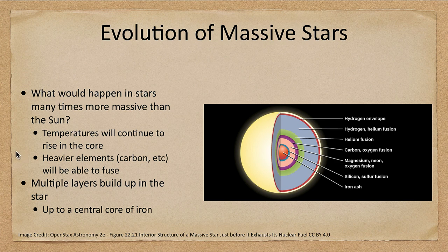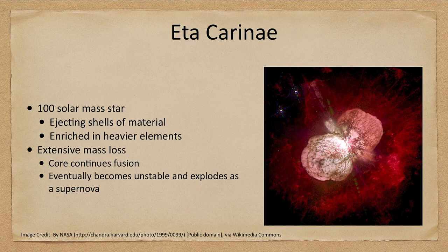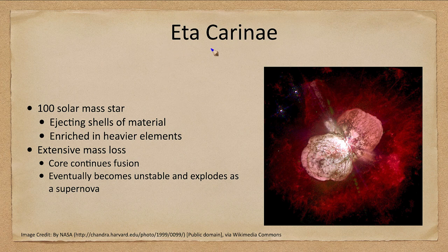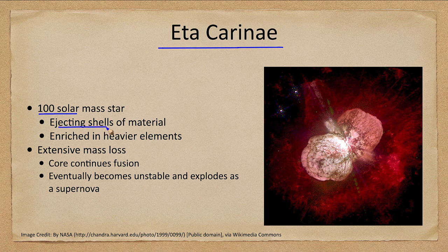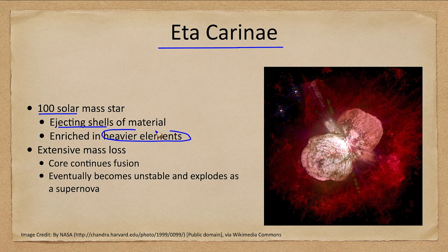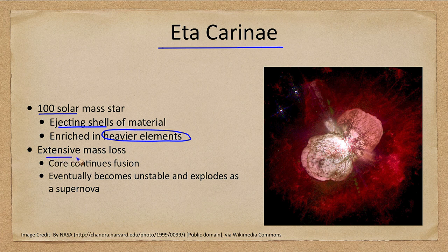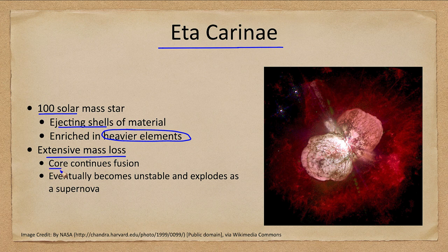Now let's look at an example of a star that is doing something just like this and that is the star known as Eta Carinae. It is a 100 solar mass star and it's been ejecting shells of material. Those shells are enriched in heavier elements probably that were fused in the interior of the star. It has extensive mass loss.